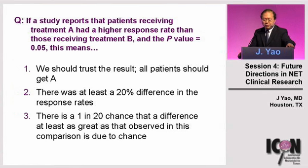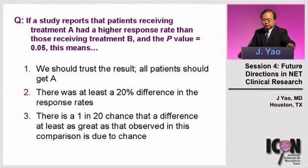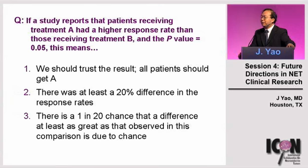If a study reports that patients receiving treatment A had a higher response than those receiving treatment B, and the p-value is 0.05, how should we interpret this result? Should we say the p-value is sufficiently low and A is superior to B and everyone should receive treatment A? Or is there a 20% difference in response rate implied by the p-value? Or is there a 1 in 20 chance that the difference seen between treatment A and B could be due to random chance?